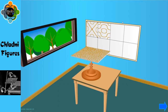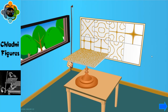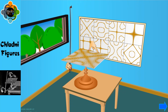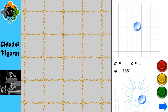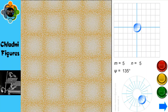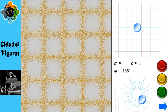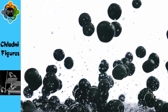Chladni figures refers to the mesmerizing patterns that form on a surface when a bow scrapes the edge of a flat plate covered with a thin layer of sand or salt. These patterns, often resembling intricate geometric shapes, are formed due to the vibrations created by sound waves passing through the plate, causing the sand or salt to move and create these fascinating formations.